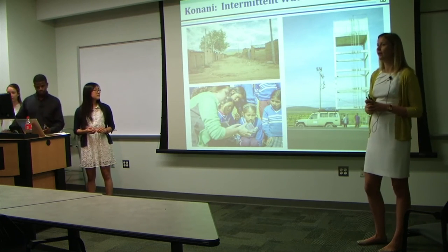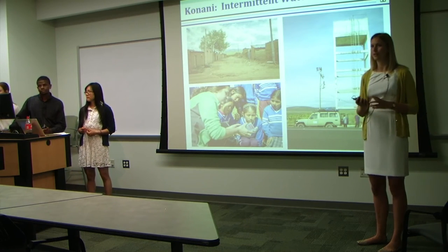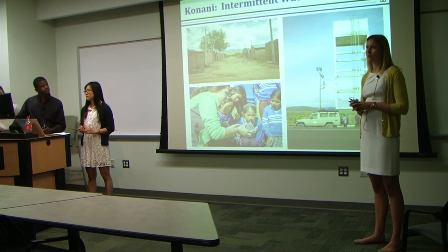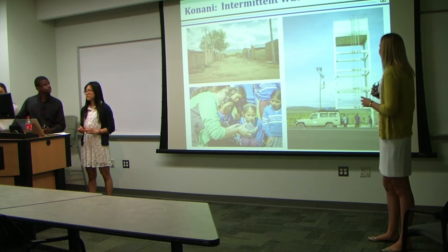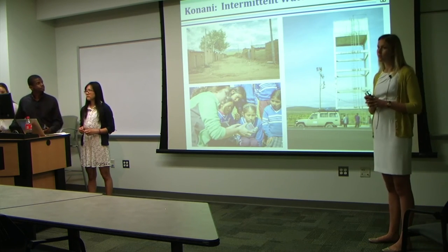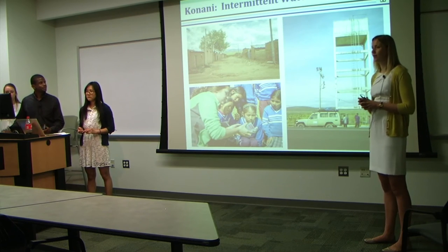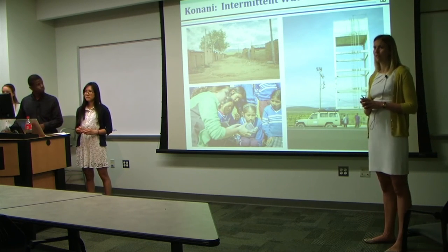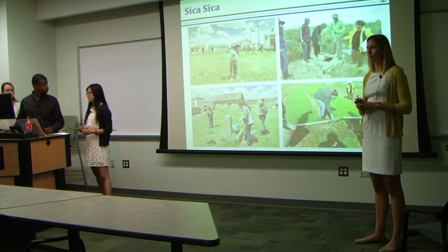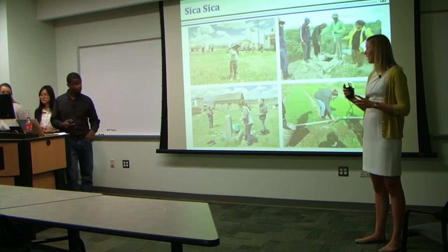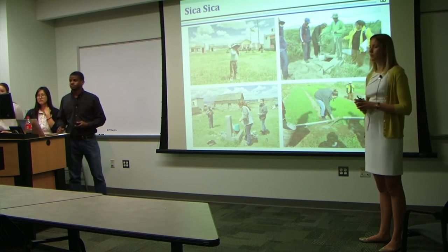Next, we went to Konani. We were initially interested in Konani because it's an intermittent water source—the water pump isn't working 24 hours a day—and intermittent sources are thought to be dirtier. We were able to take a sample from the water tower—the source of the water—as well as from schools, homes, and even a medical clinic around the area. We were also able to see the wastewater treatment plant they were building there. Finally, some of our team sampled in Sika Sika, a municipality where they looked at potential drinking water sources such as springs and wells, and sampled a few schools and homes as well.